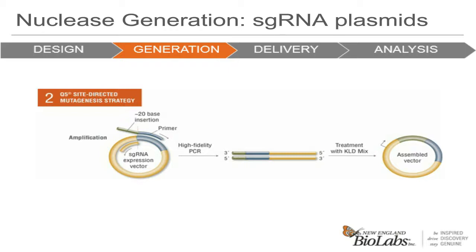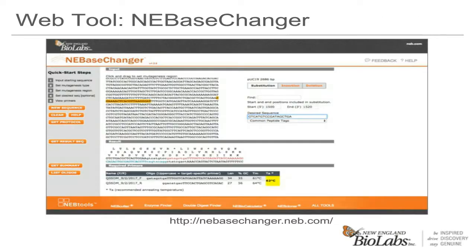NEB has a very convenient web tool for designing the primers to make the changes that you want — the NEBaseChanger. It is available on the NEB website and it's an easy way to design primers for doing Q5 mutagenesis. The output contains the sequences for the primers to be ordered as well as a protocol for the PCR reaction that gives you the proper TMs for those primers. The tool simplifies the mutagenesis design and is especially useful for replacing small sequences such as Cas9 target sequences.